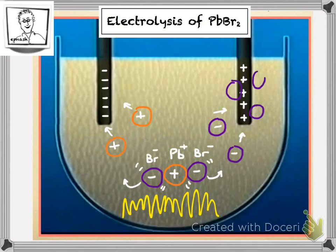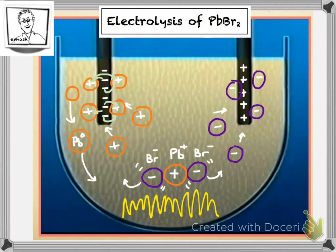As they do so, at the negative electrode, ions will stick to the negative electrode and gain electrons. They will neutralize the ions and turn them into neutralized lead in the form of liquid, which would fall to the bottom of the test tube.